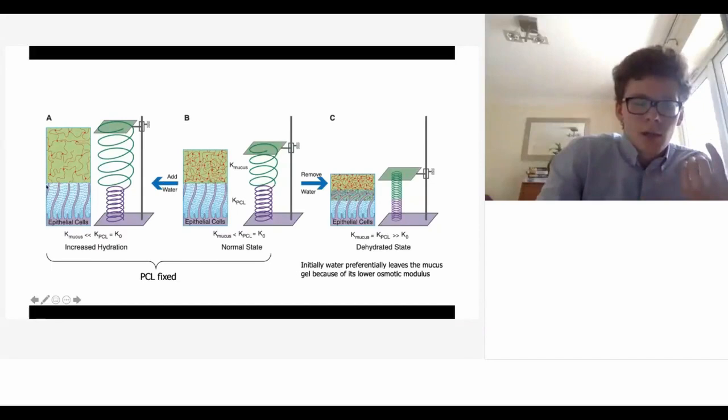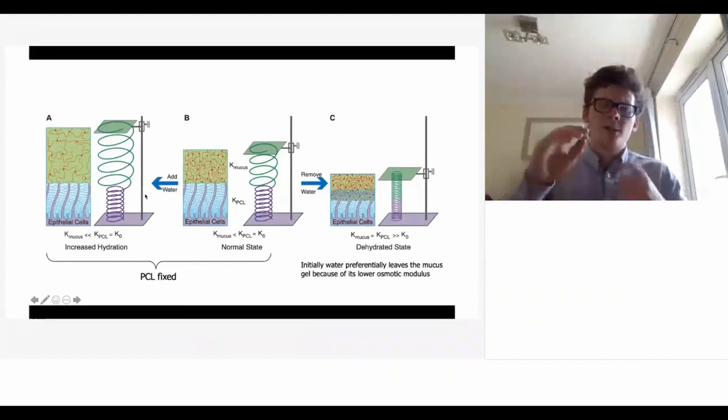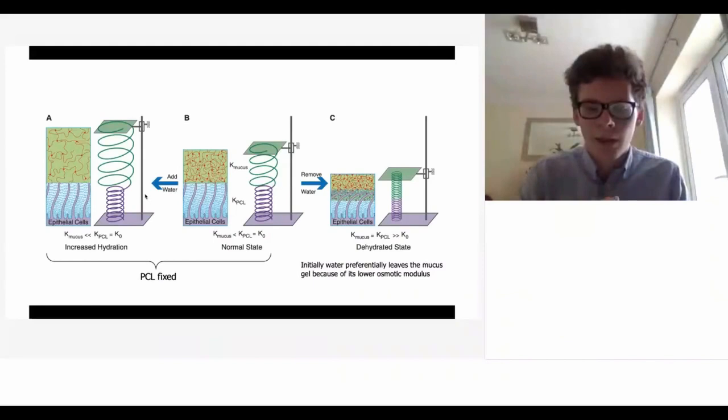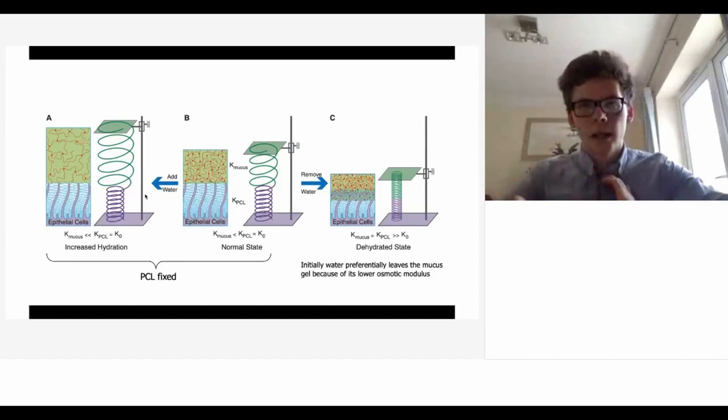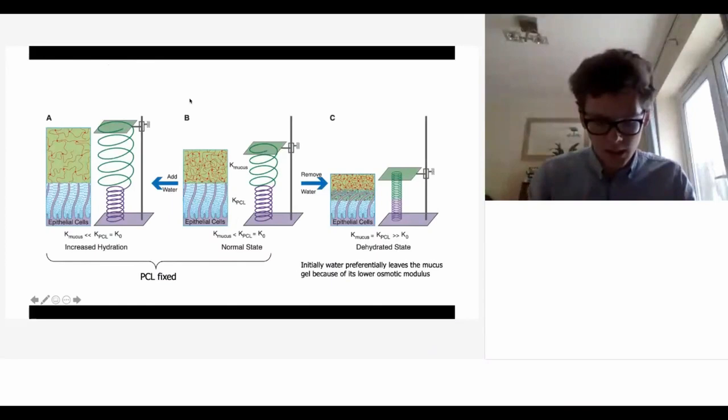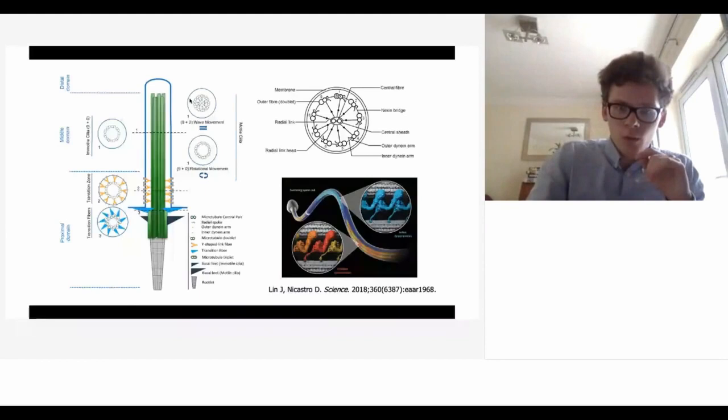Interestingly, when water is added, the periciliary layer stays the same. It's thought that in a disease state the mucus is not working at its optimal viscoelasticity to remove the layer, but the body can then upregulate to reach that optimal state to deal with the pathogen, and then return to a normal state.